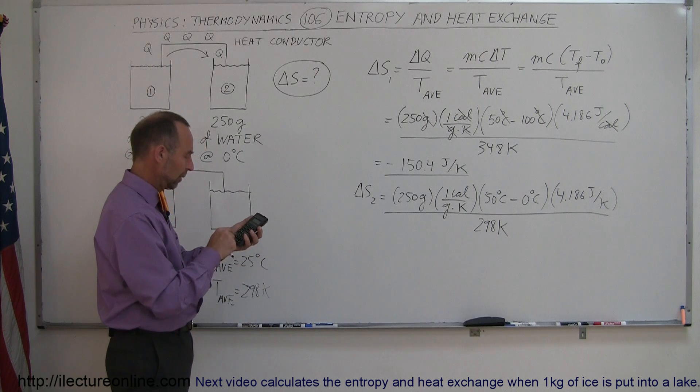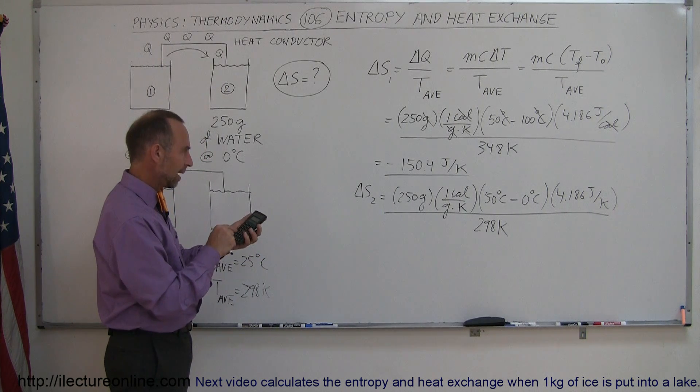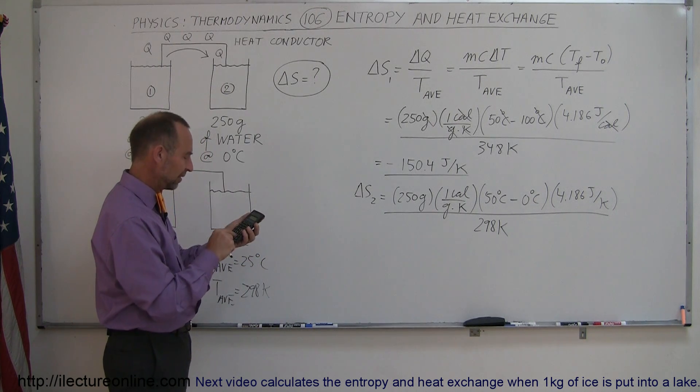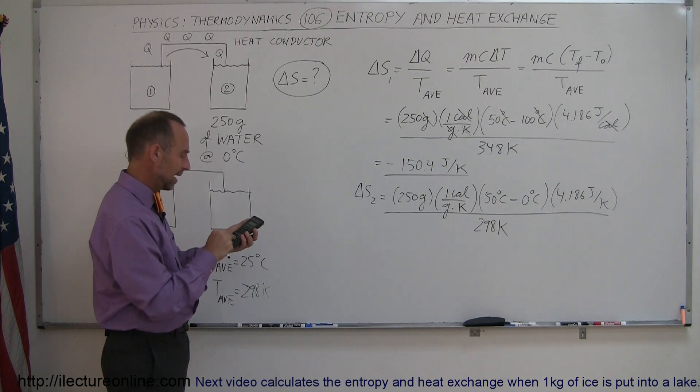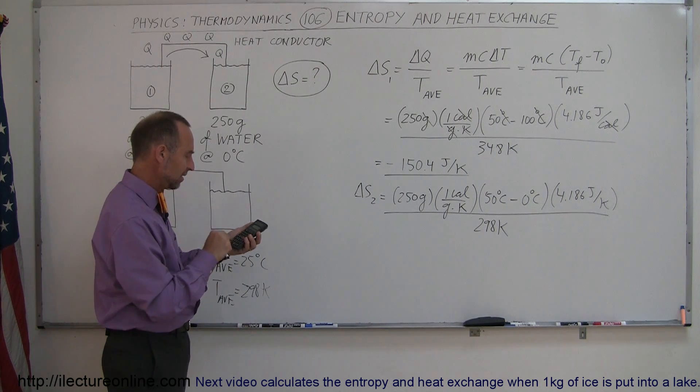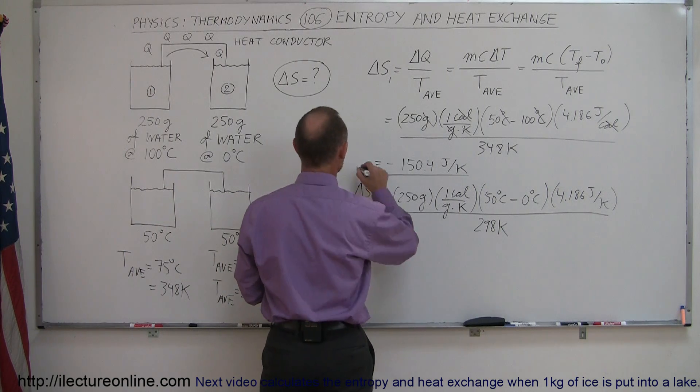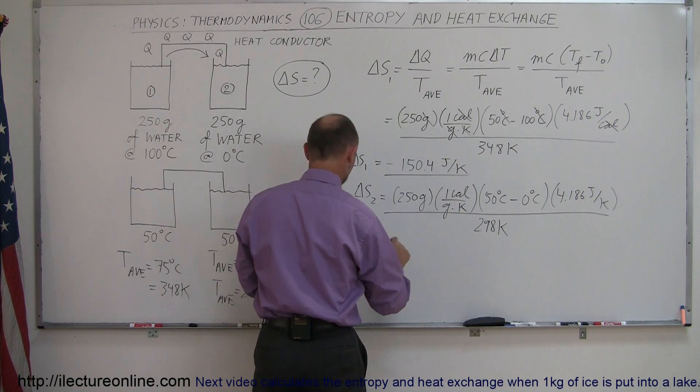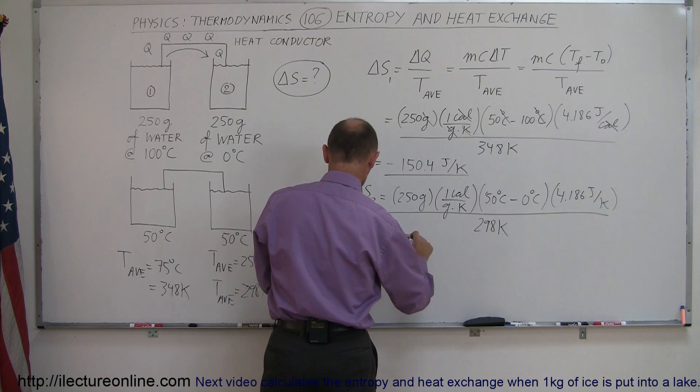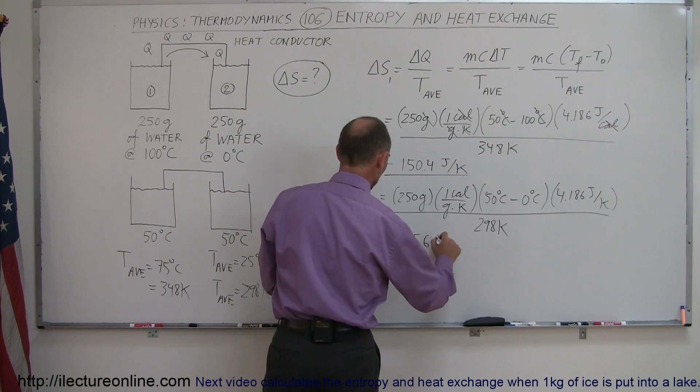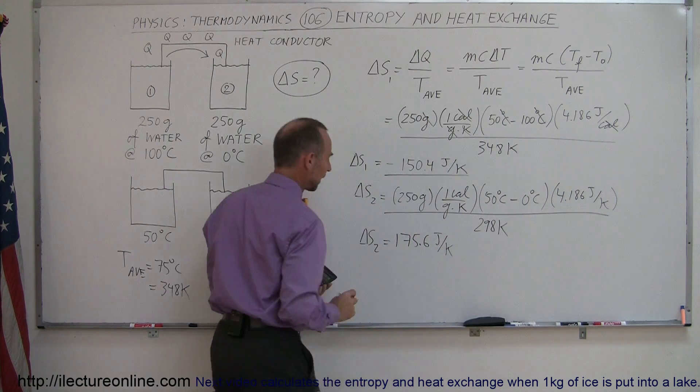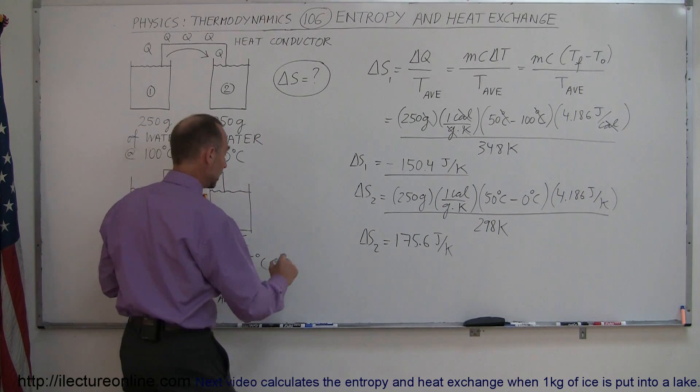So, let's figure out what that is equal to. We got 250 times 50, that's a positive 50, times 4.186, and divided by 298. And here we get delta S2, and let me write here, delta S1, so we compared, is 175.6 joules per Kelvin.